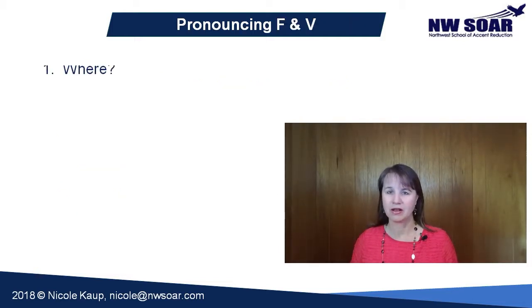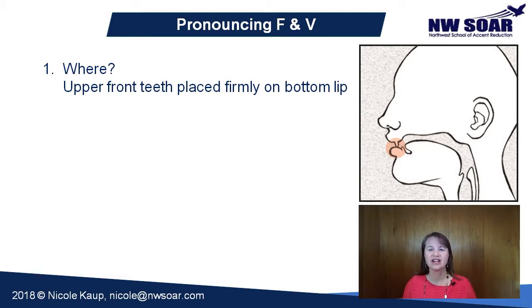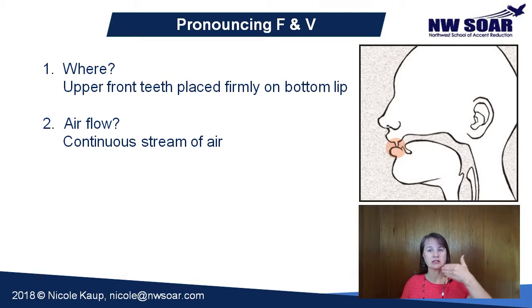Number one: WHERE. In order to make an F or a V sound, you'll want to make sure that your upper front teeth are placed firmly on your bottom lip. Second, air flow. The air flow is a continuous stream of air. You'll notice the air flow does not stop and restart — it's a continuous flow of air, but it is noisy.